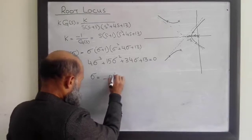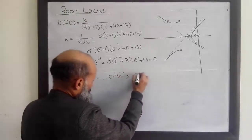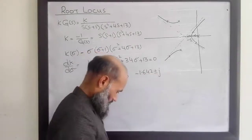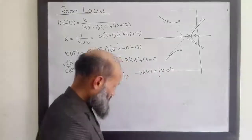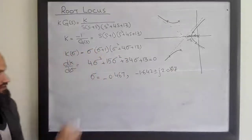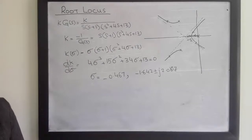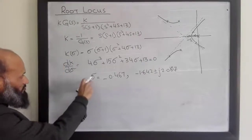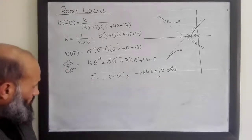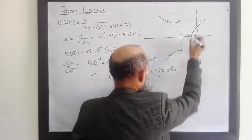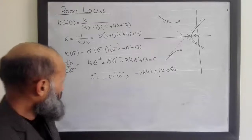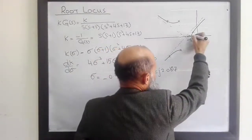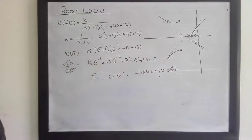This third-order polynomial has three roots. Among them, σ = -0.467 is one, and the others can be checked. We identify which root corresponds to the breakaway point by observation or by checking the second derivative. The breakaway point lies slightly to the right of the midpoint between 0 and -1, so the root locus emerges from somewhere near there.